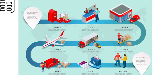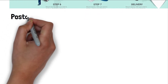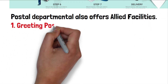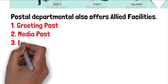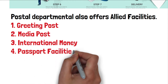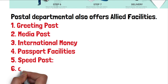Mail facility is a facility provided by the postal department which transmits parcels from one place to another. Moving on to the allied or additional facilities given by the postal department: the first is greeting post, where you can send a greeting to a person through the post office. There is also media post, international money transfer, passport facilities, speed post, and e-billing.